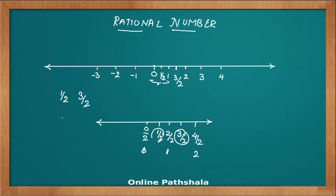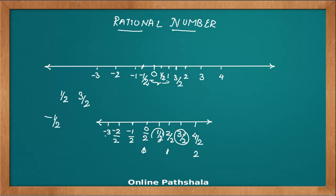The same thing applies to negative numbers as well. When we say negative 1/2, it should be between 0 and minus 1, just as positive 1/2 is between 0 and 1. Applying the same logic, we label the negative side: minus 1/2, minus 2/2, minus 3/2, and so on. So minus 1/2 lies between 0 and minus 1, and minus 3/2 lies between minus 1 and minus 2.